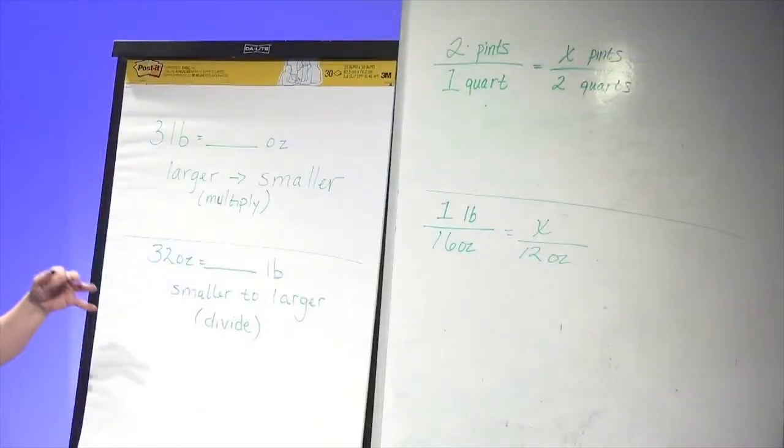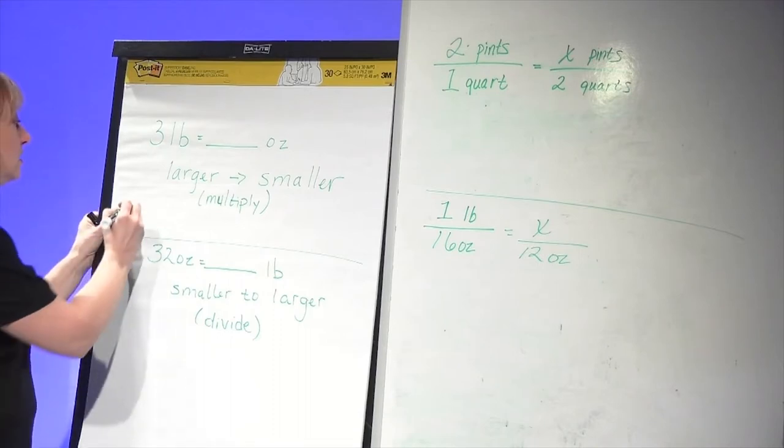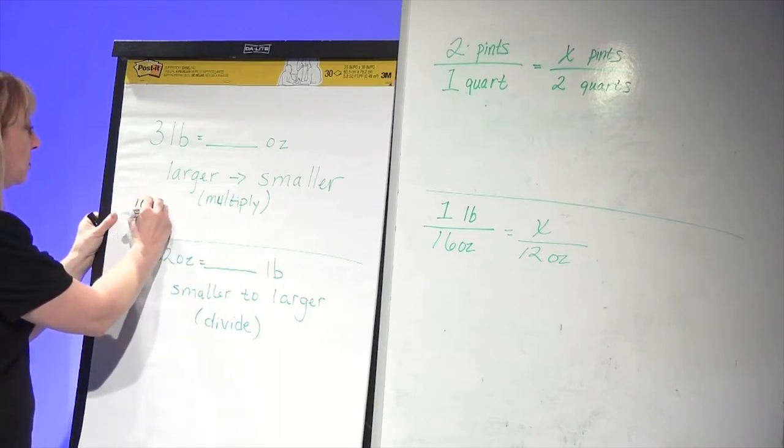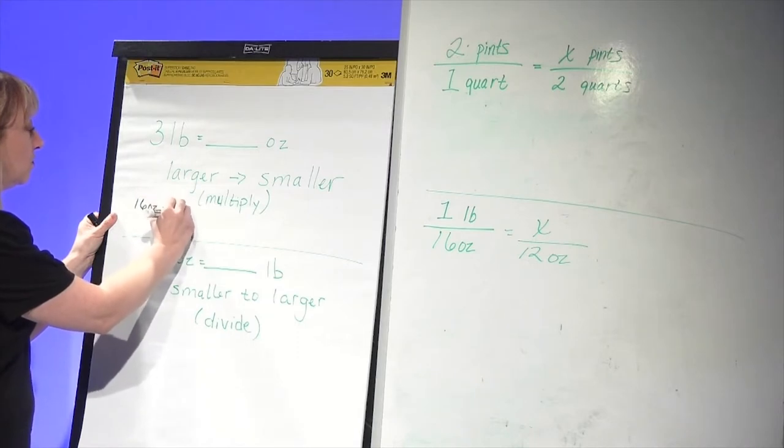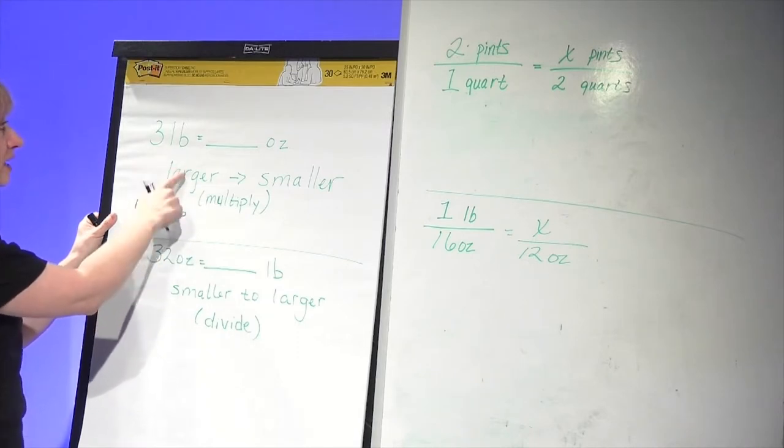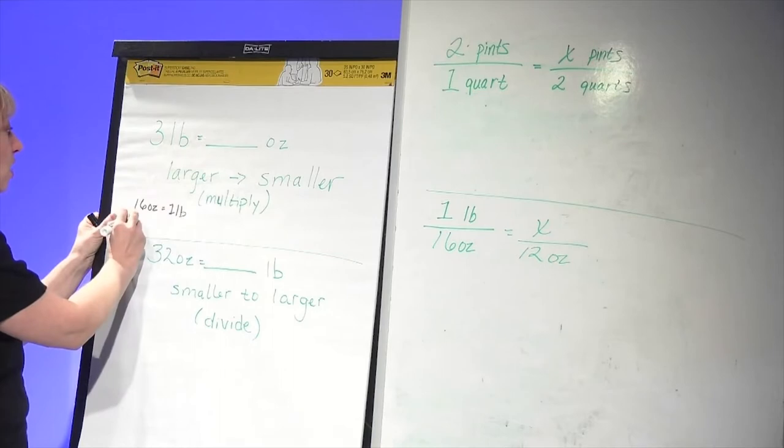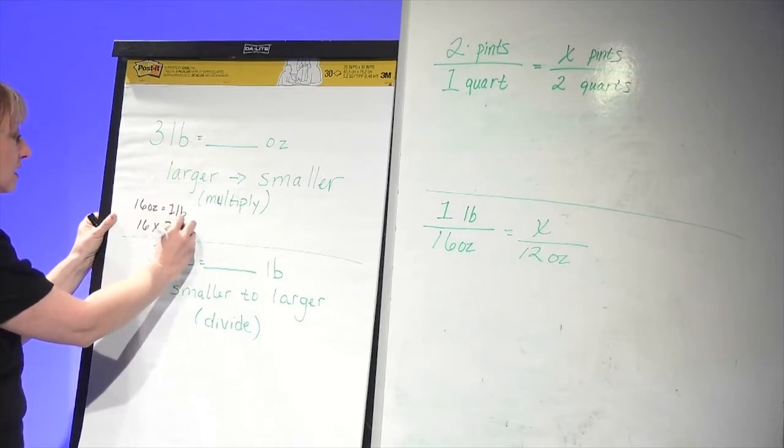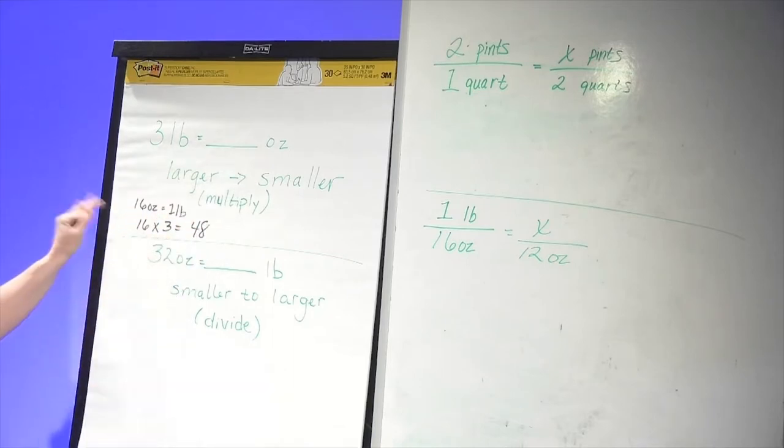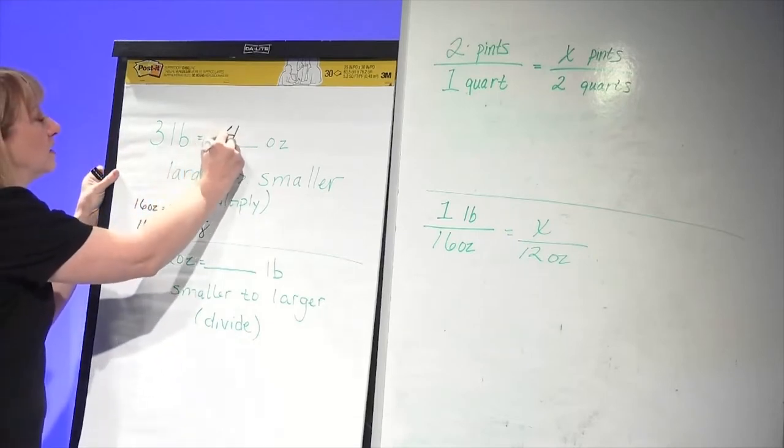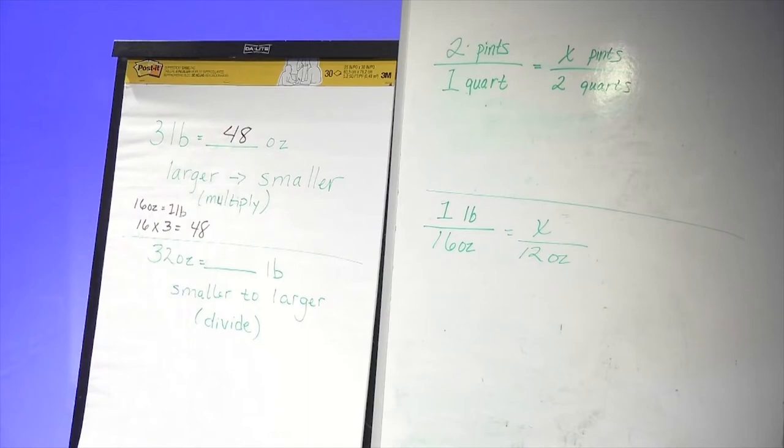We know from the previous page and from the cheat sheet that there are 16 ounces in one pound. And because we're going from a larger to a smaller, pounds to ounces, we're just simply going to multiply 16 times 3. 16 times 3 is 48. So that means there are 48 ounces in three pounds.